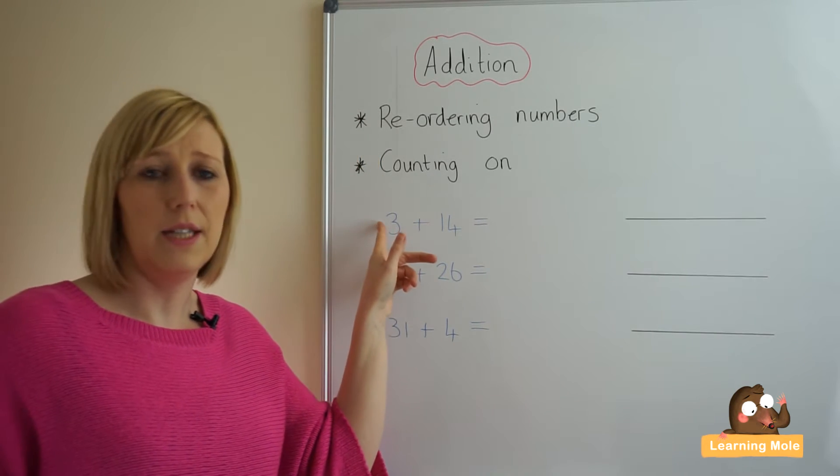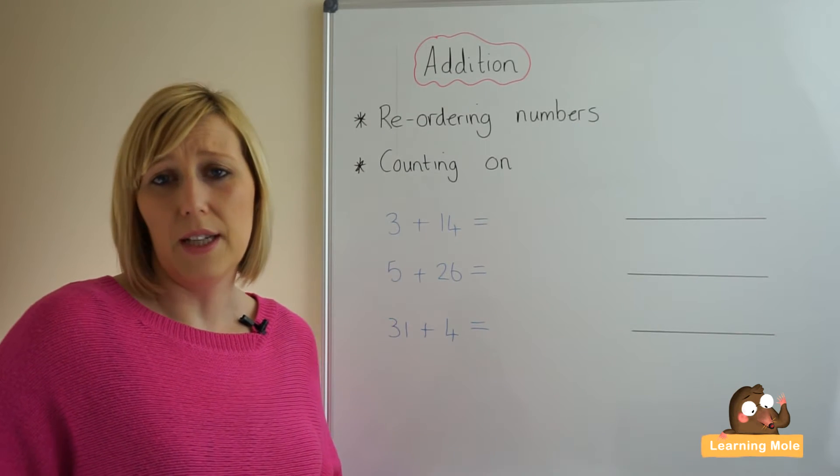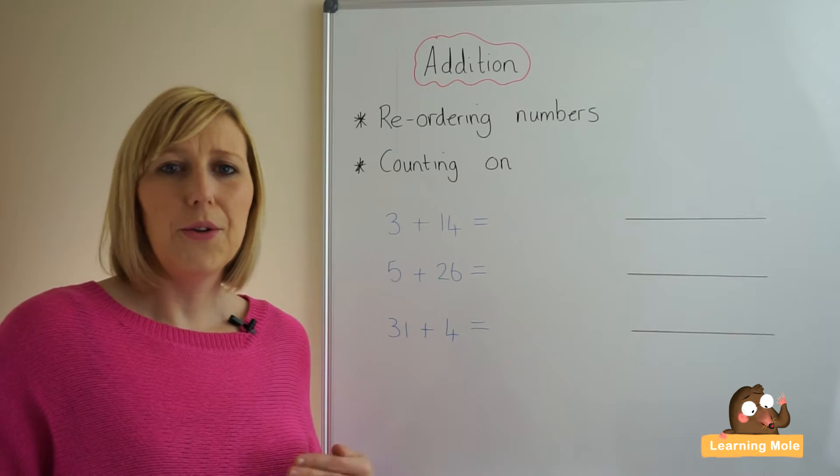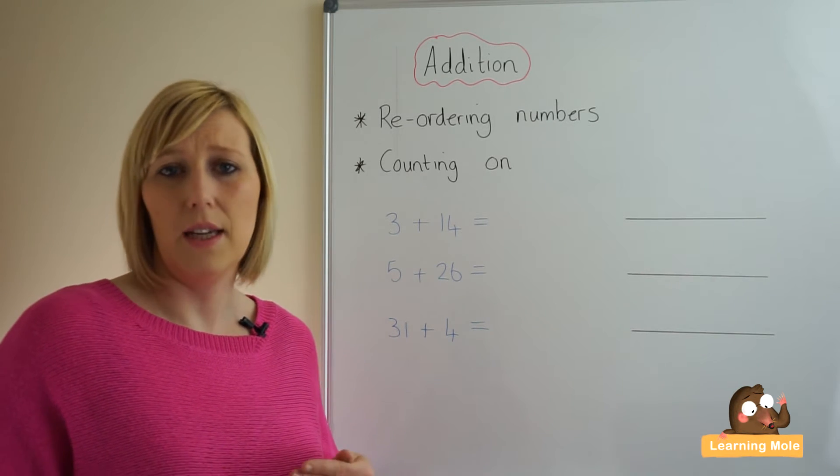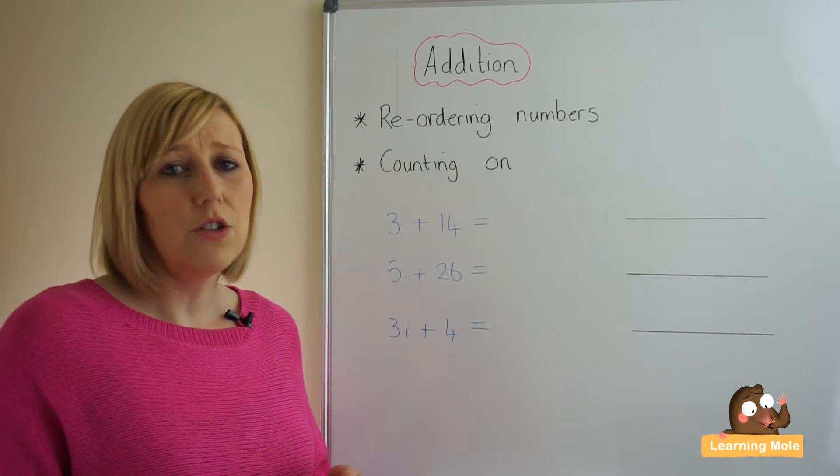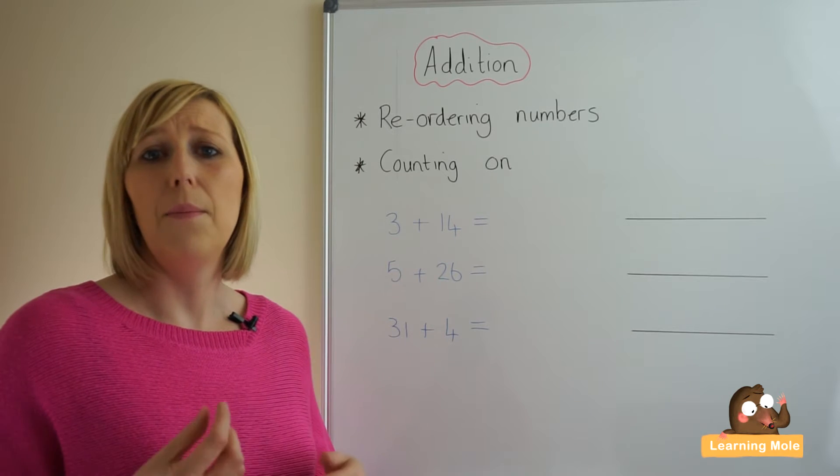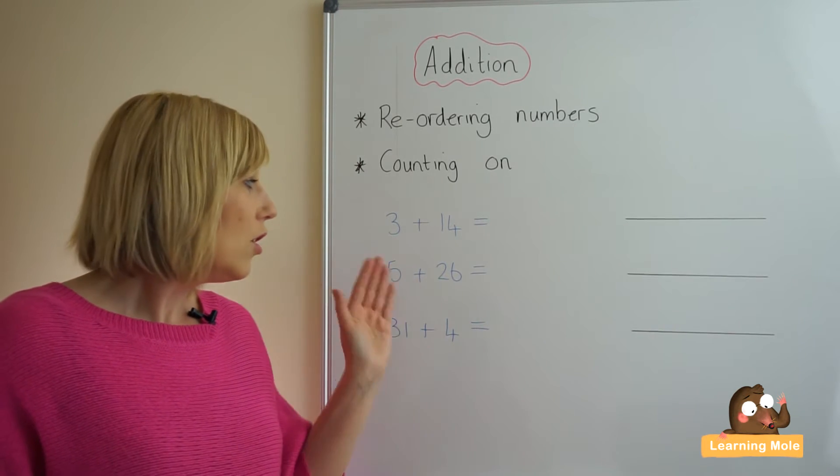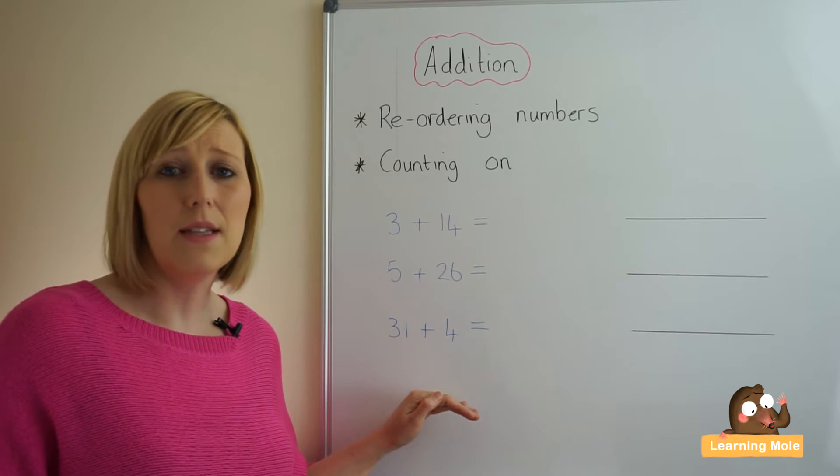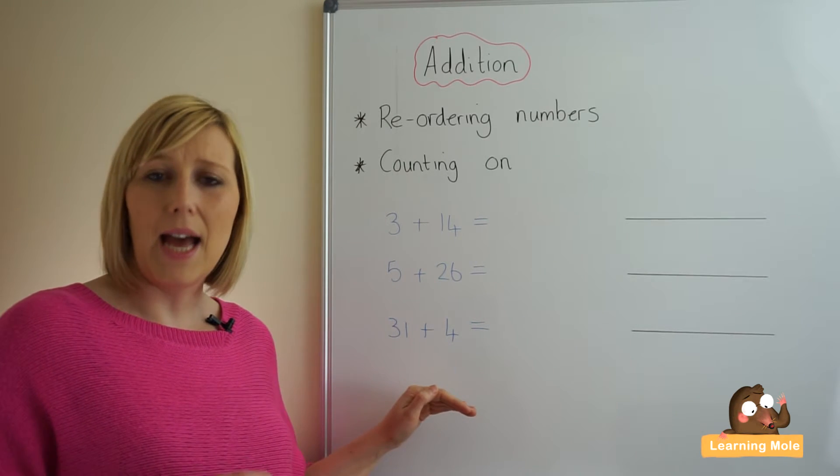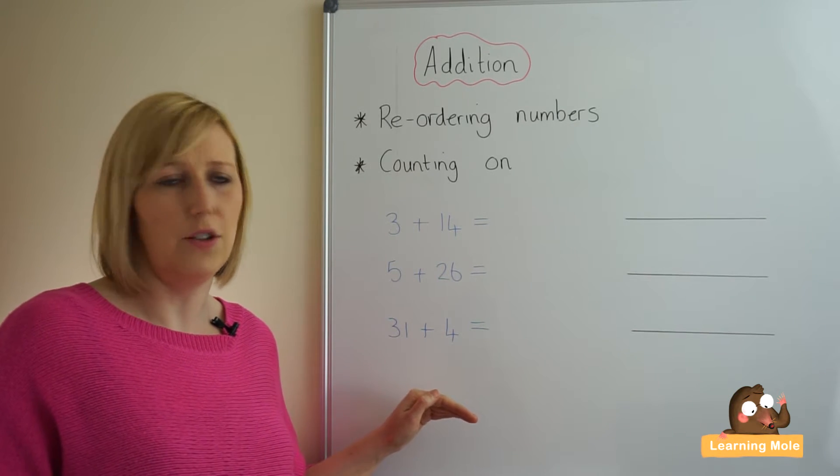Reordering numbers and counting on. Reordering numbers is a very important strategy to teach your child because with addition you can actually put the numbers whatever way around in the calculation that you like. So encouraging your child to put that biggest number first will really help them in their mental thinking and their mental ability. Give your child a selection of calculations where the biggest number is not first and ask them to reorder their calculation so that their biggest number is first.